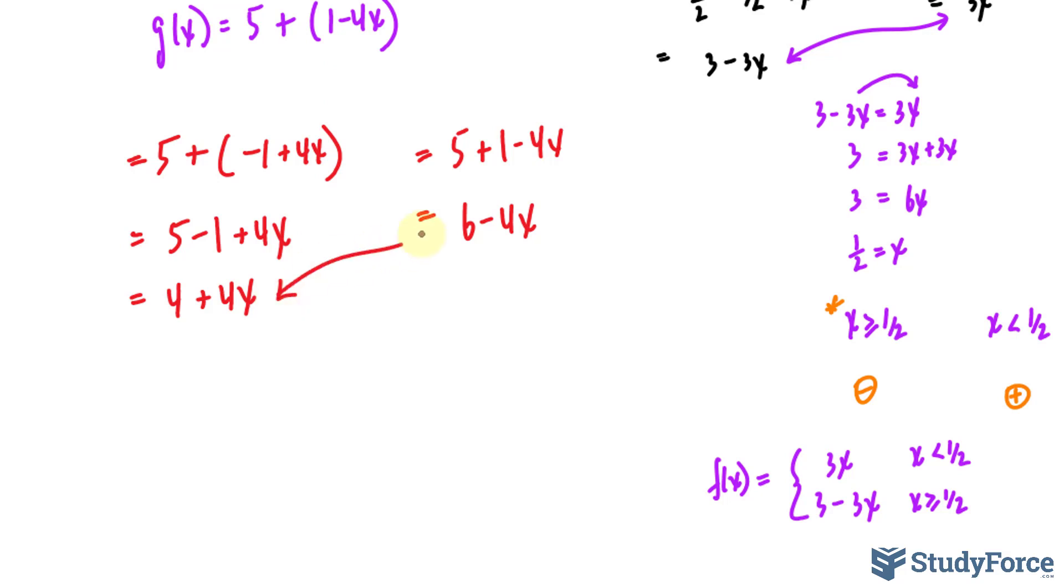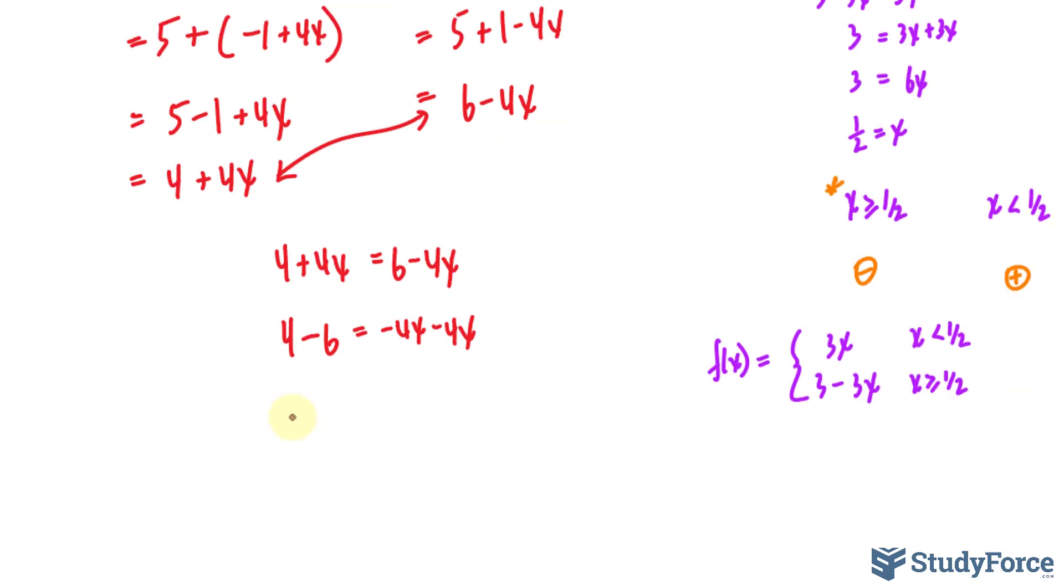We will now solve for x by setting both of these equations equal to one another. 4 minus 6 is equal to negative 4x minus 4x. Negative 2 is equal to negative 8x, and we get a quarter is equal to x.